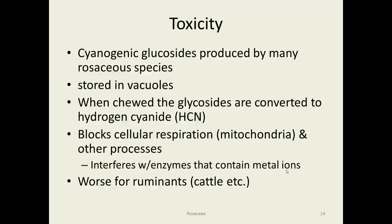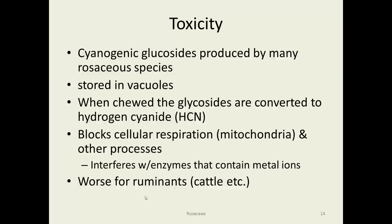Toxicity: cyanogenic glucosides are produced by many Rosaceae species. They're stored in the vacuoles — the large water-filled bags in the cells — so they break very easily when chewed by animals or humans. Almost immediately they're converted to hydrogen cyanide, which interferes with enzymes in our bodies that contain heavy metals essential to their function. The cyanide ion knocks those metal ions out until the enzymes become ineffective, shutting down respiration. The effects are worse in ruminants, and when cattle get into some members of this family, they can die.